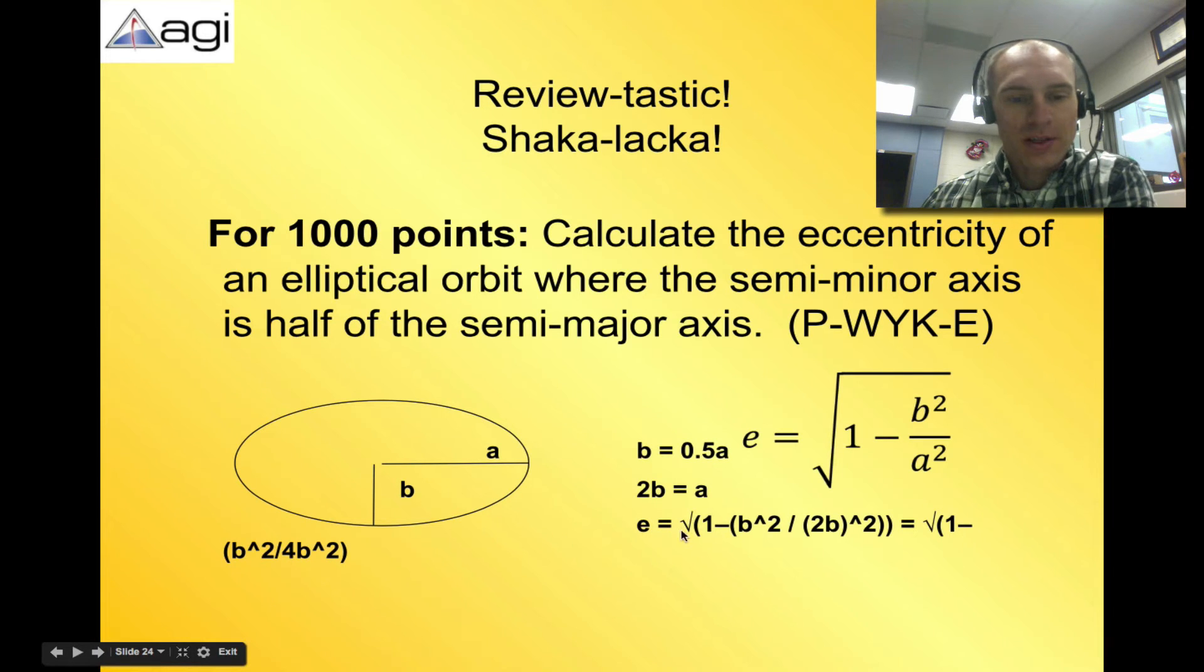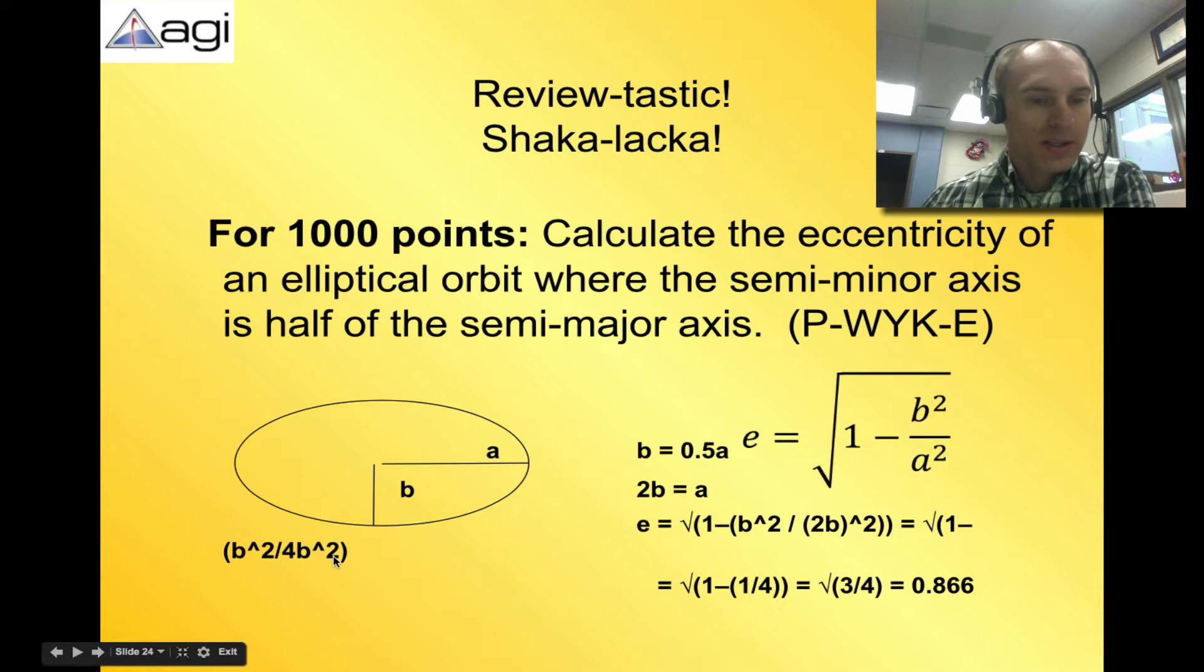So let me walk you through this. This didn't quite show up on the screen the way I wanted it to, but it's E. Eccentricity is the square root of 1 minus B squared divided by 2B squared, because I've replaced A with 2B. And now if I square 2B, I get square root of 1 minus B squared over 4B squared. Because 2B squared, you square both so you get 2 squared and B squared, you end up with 4B squared. Well, from there, B squared divided by 4B squared, the B squareds will cancel out. So I just end up with 1 over 4, which is why right here I have square root of 1 minus 1 over 4. Well, 1 minus 1 over 4 is 3 fourths. And the square root of 3 fourths is 0.866. So that is the eccentricity of an elliptic orbit where semi-minor is half of semi-major: 0.866.